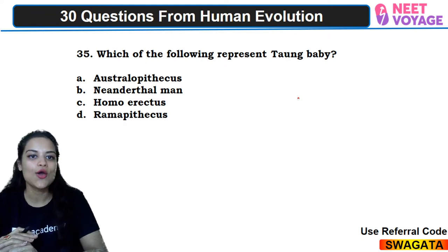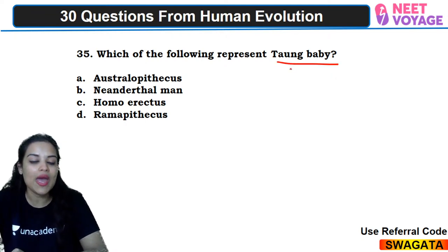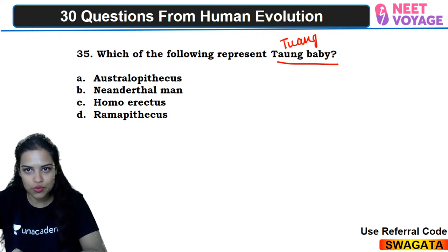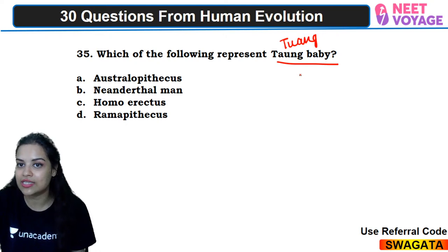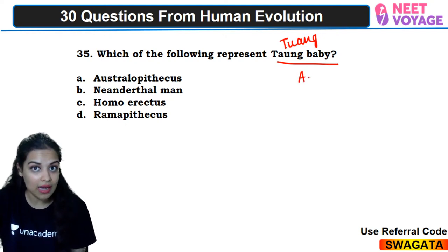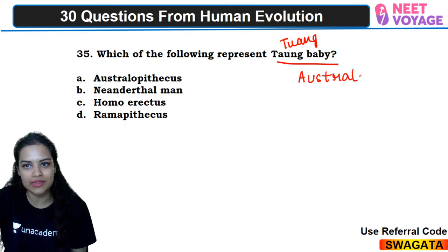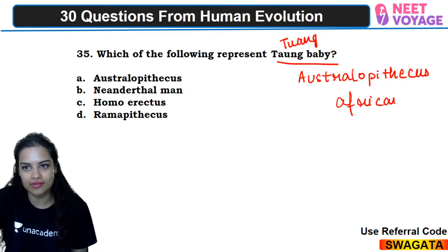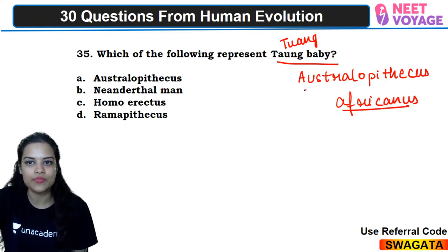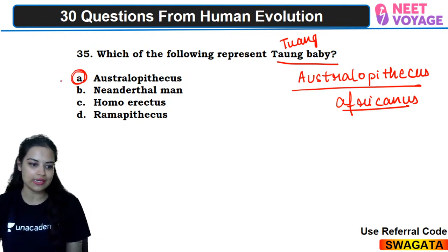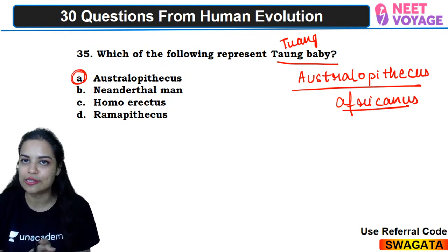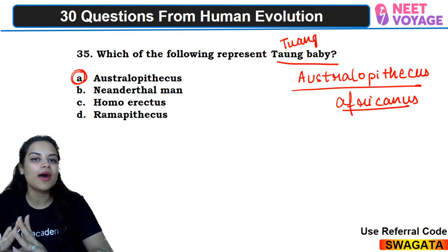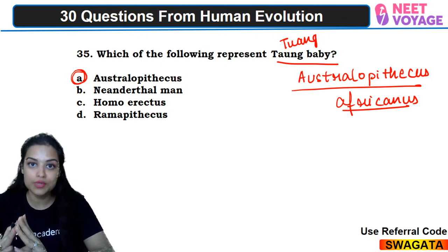Bonus question 35: which of the following represents the Taung baby? Taung baby's scientific name is Australopithecus africanus — T-U-A-N-G, Taung, is a region in South Africa where this skull was found. So they belong to Australopithecus genus. A would be the right answer for the 35th question.